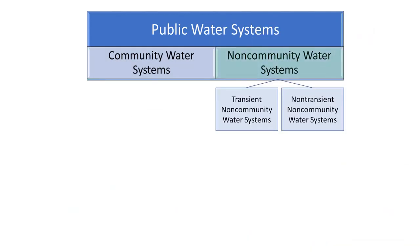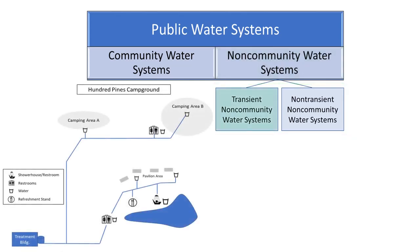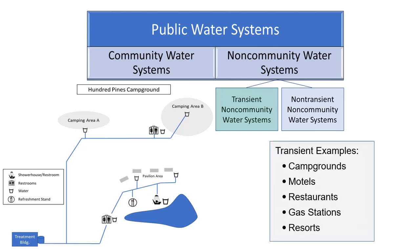Many people are not as familiar with non-community water systems. Non-community water systems include both transient and non-transient systems. Transient non-community water systems serve people at least 60 days out of the year, but not necessarily the same people or on a regular basis. The population served is considered transient because they are only there for a short period of time. Examples may include gas stations, resorts, campgrounds, motels, and restaurants.